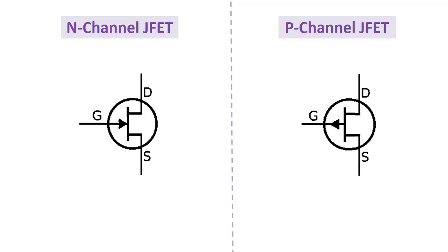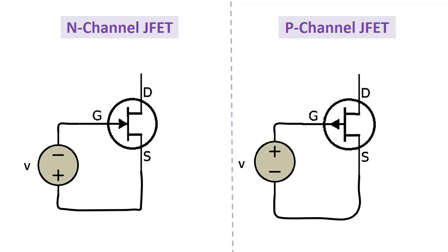To trigger N channel JFET, the negative pin of the connected source must be connected to the gate of the JFET and the positive pin to the source. The connection in P channel is vice-versa. The positive pin of the source must be connected to the gate of JFET and the negative pin to the source. This is the difference between the two types. The voltage value of the source connected between gate and source and the current value between drain and source are checked in both.